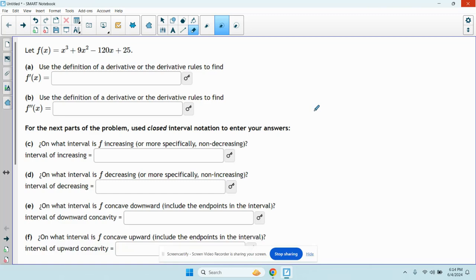This is use the definition of a derivative or the derivative rules to find f prime. Well, that's easy enough. It's just going to require the power rule. So we have f prime of x is equal to bring down the power, that's 3x squared plus we have 9x. Bring down the power, that's 18x minus 120.